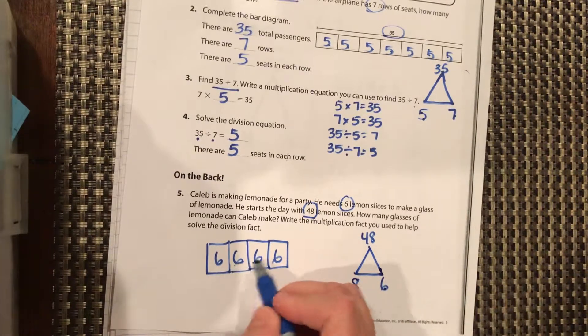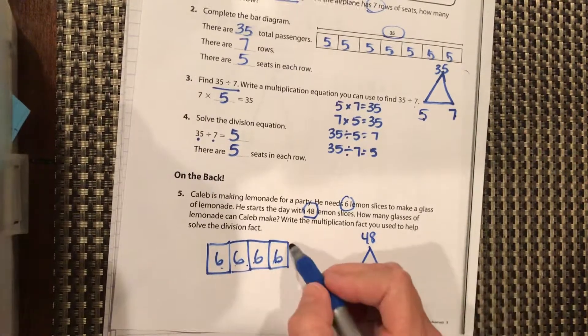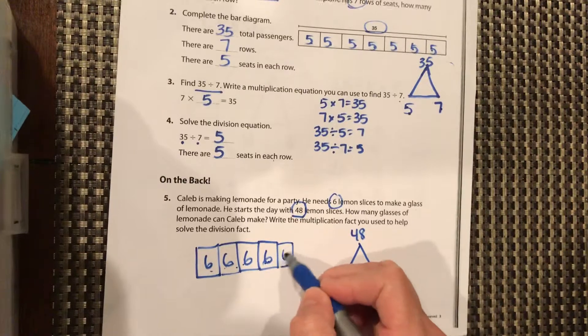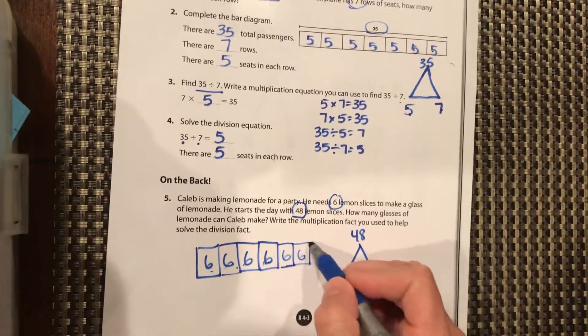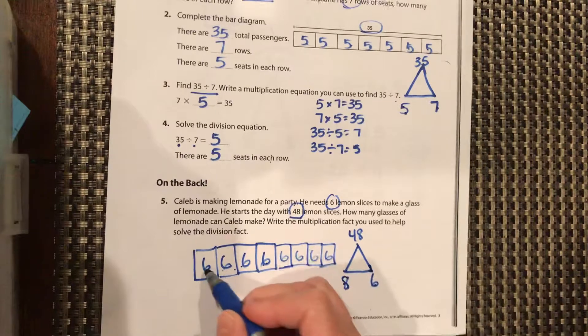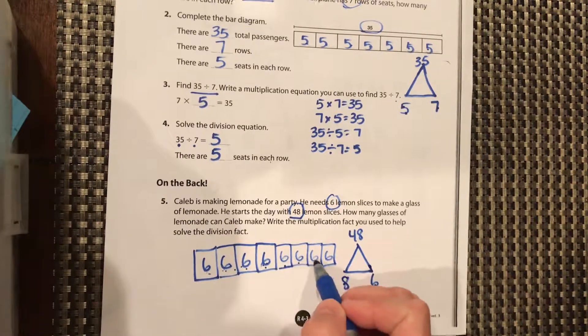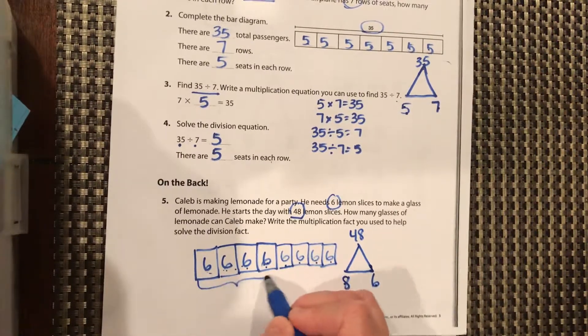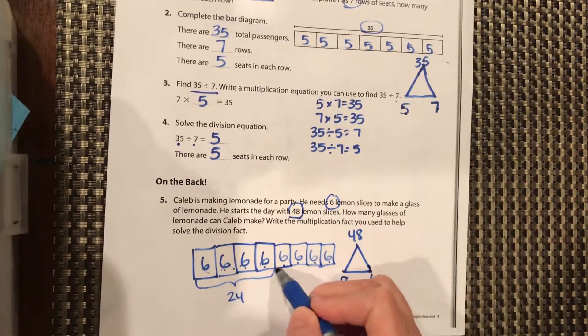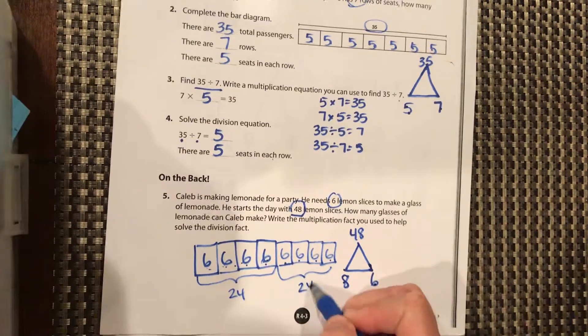Okay, but we can always check here. 4 of these 6s is 24. 1, 2, 3, 4, 5, 6, 7, 8. We know 6 times 4 is 24, and that's also 24.